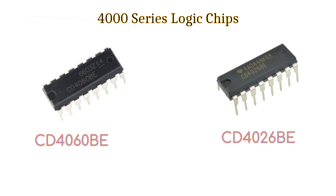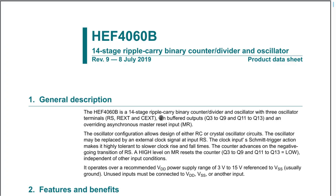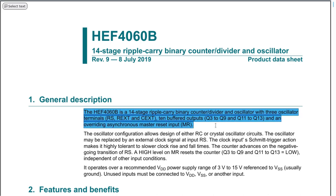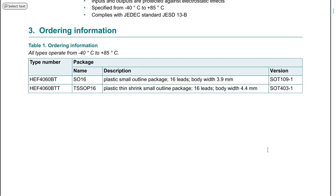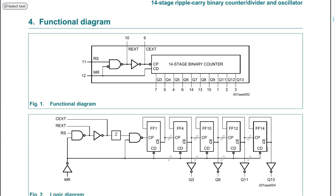The 4060 chip is a 14-stage ripple carry binary counter divider and oscillator on a single chip, meaning this IC is equivalent to our AND gate, Schmitt trigger, and a cascade of 14 flip-flops in a single package.